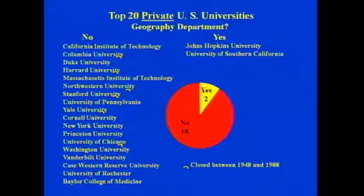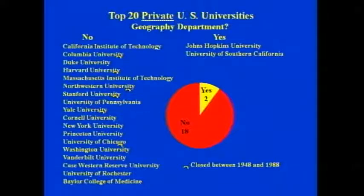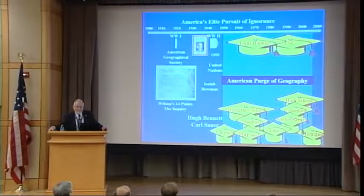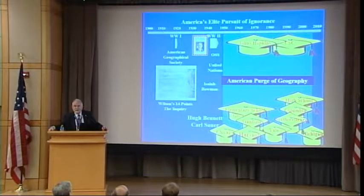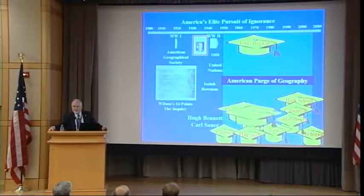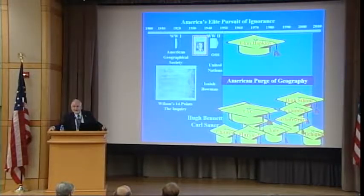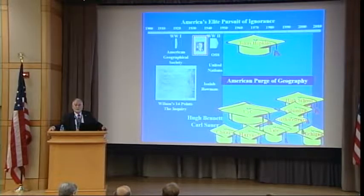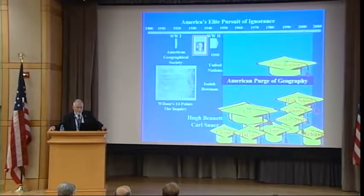Today, of the top 20 private universities in the U.S., only two have geography departments. One of them is Johns Hopkins. The other is the University of Southern California, which is closing its geography department right now in the midst of all the boom. And Johns Hopkins is down to two faculty who claim to be geographers. So it's hovering.